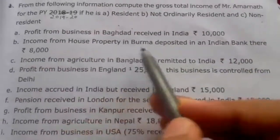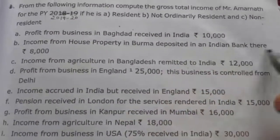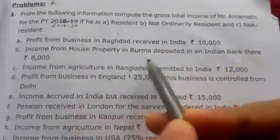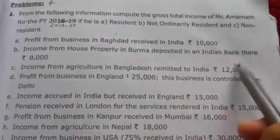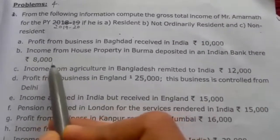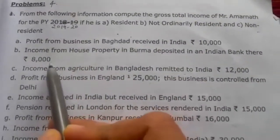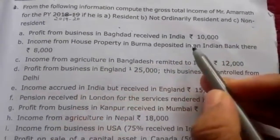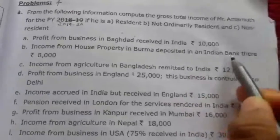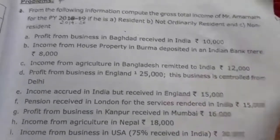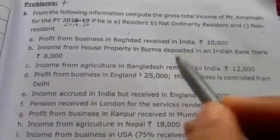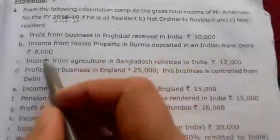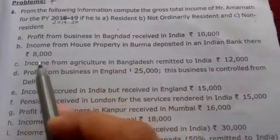Second, income from house property in Burma deposited in an Indian bank there. The Indian bank is situated in Burma, so the income is not accrued or received in India — it is foreign income. Therefore it is taxable only in the hands of the ordinarily resident.